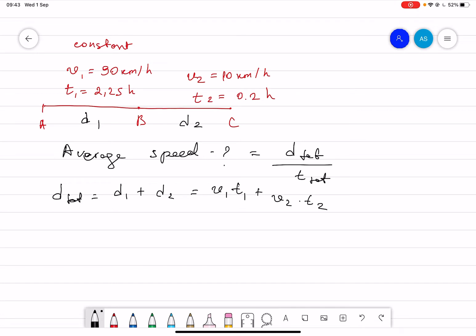And what is the total time? Total time is just t1 plus t2, which are already given. So you take this d total and the t total and you plug it in, and you will find the average speed.